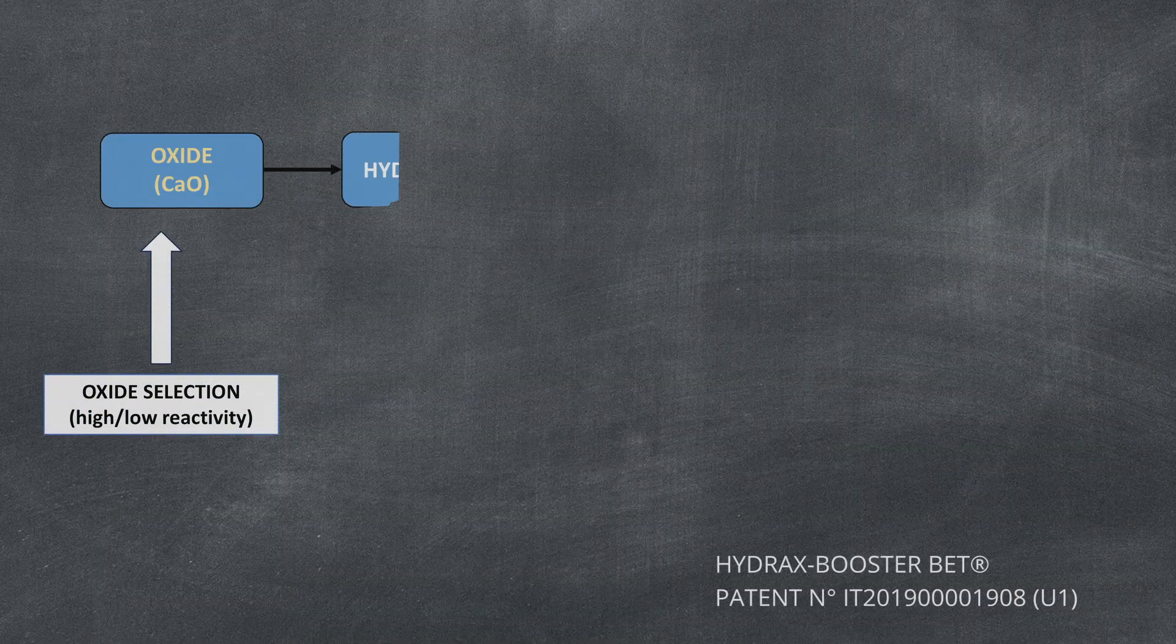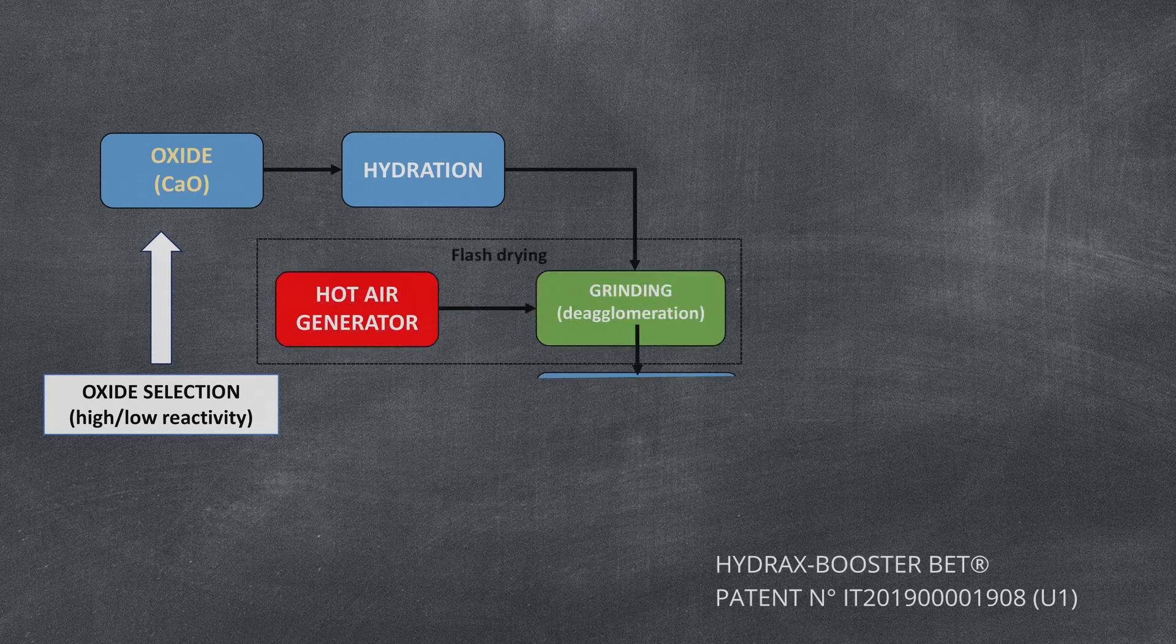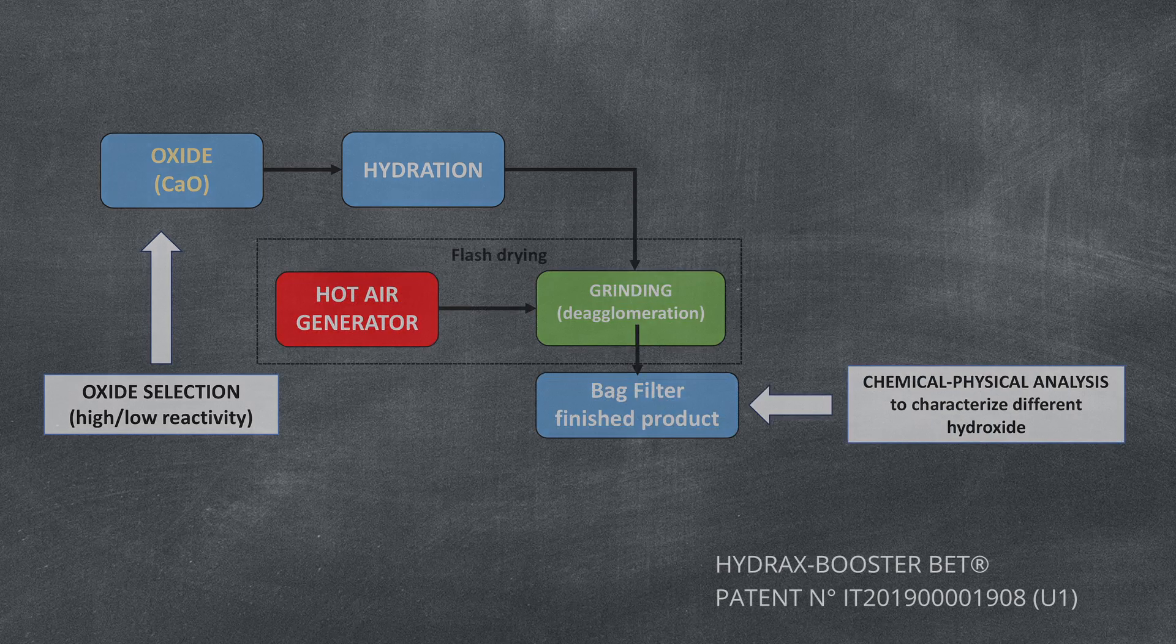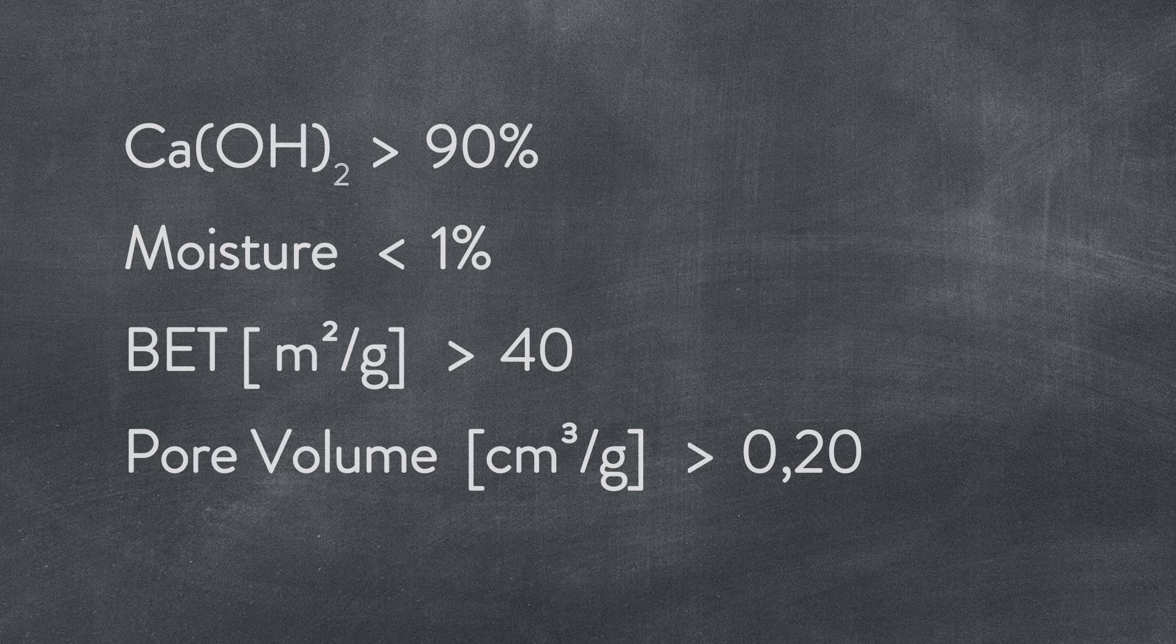The patented process Hydrex Booster BET can evaluate the aptitude of lime oxides to produce hydrated limes with a high specific BET surface area.